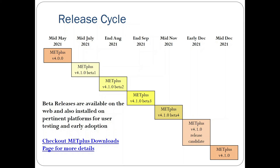Here's what our release cycle looks like. We had our version 4.0.0 release in May of this year. We're shooting for our next coordinated release in December, and in between, we have beta releases that allow us to get development out to interested users and stakeholders more frequently so they can do testing and verify things are configured and computing as expected. We just released beta 2 at the end of August, and we're shooting for beta 3 in late September or early October, and our final beta in mid to late November.